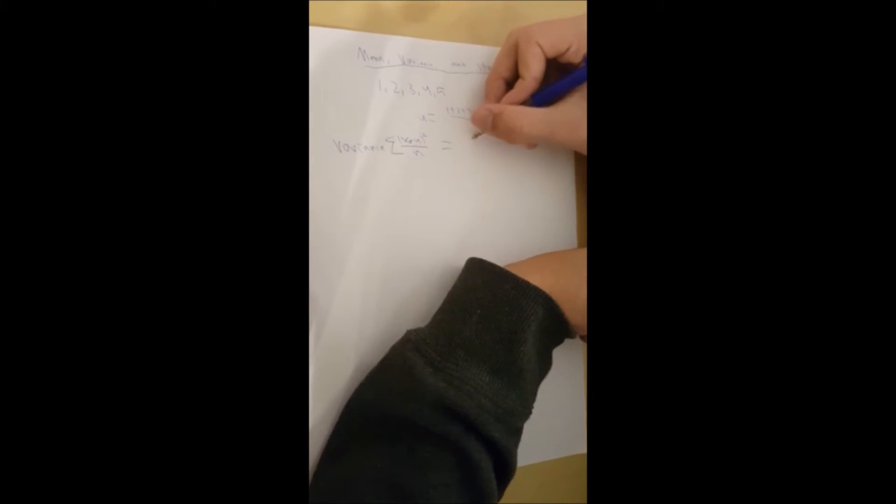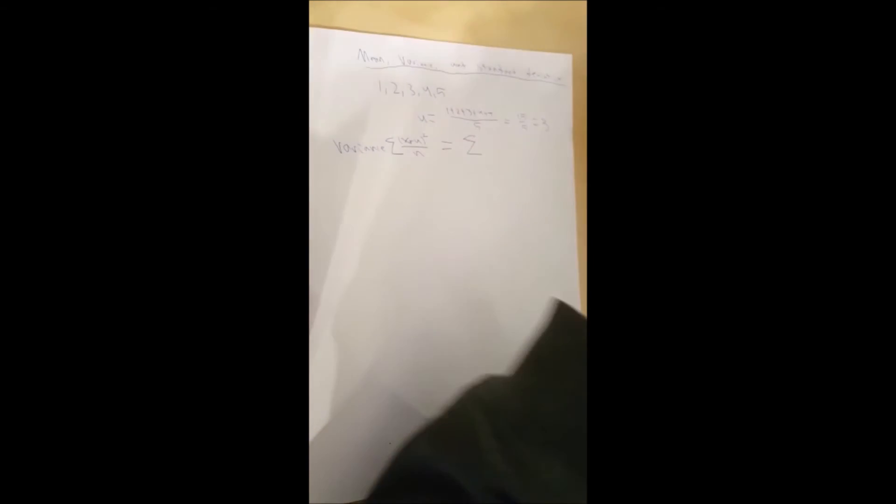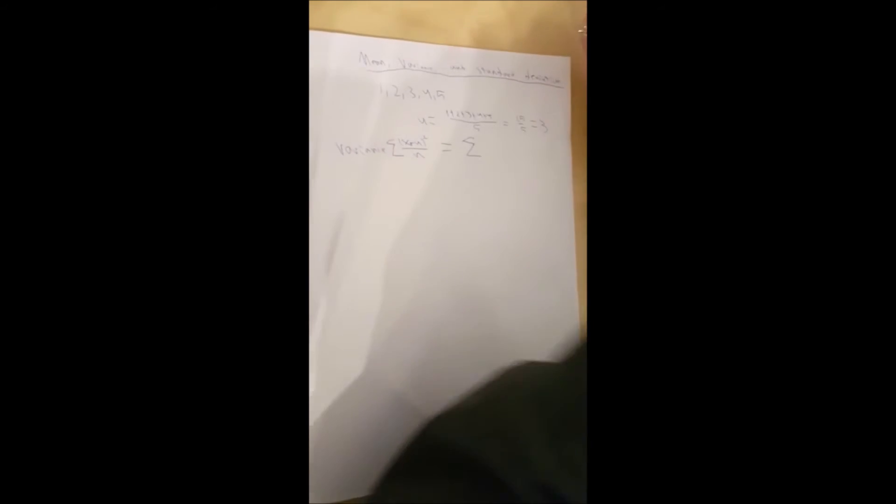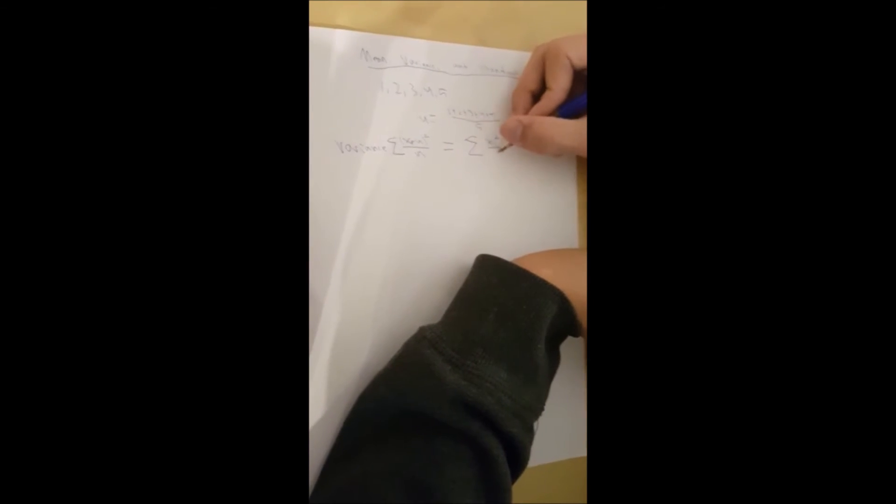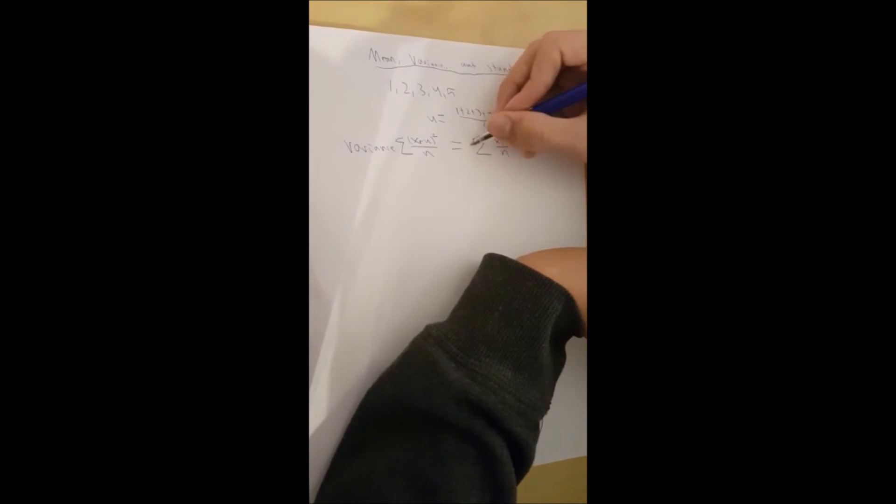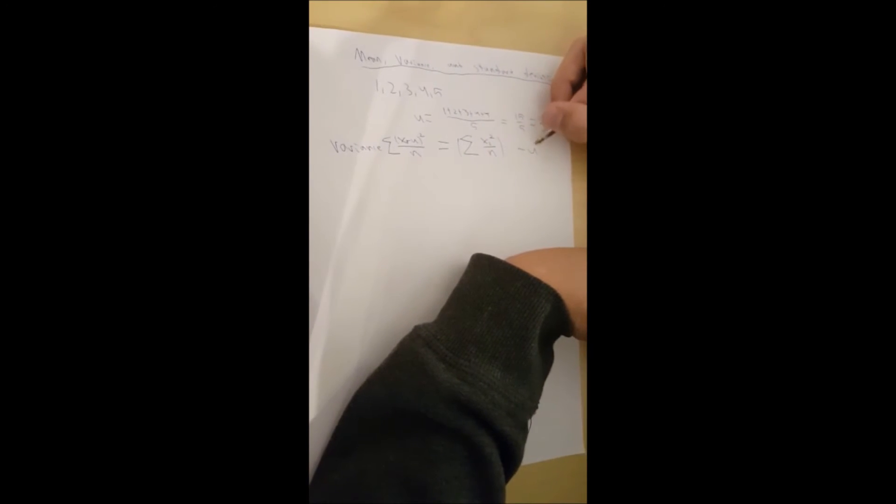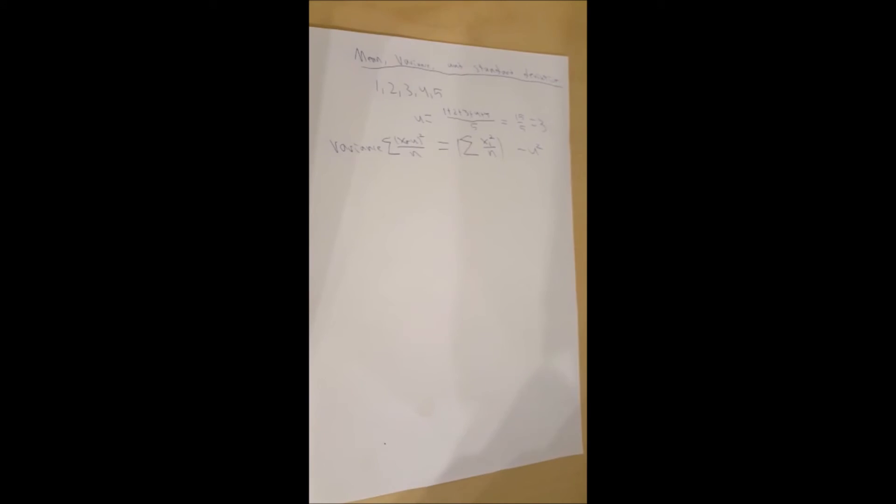Or this one, this one is more common, or I don't know if it's more common but it's easier to use. So I'm just going to be using this one. You take the x value, you square it, and you divide it by n, and use that whole thing minus the mean squared. It's way easier to plug in.